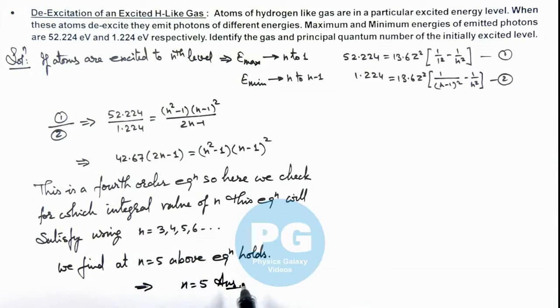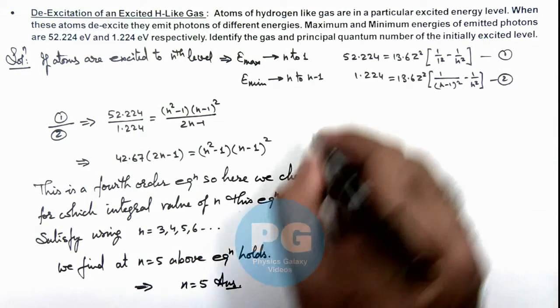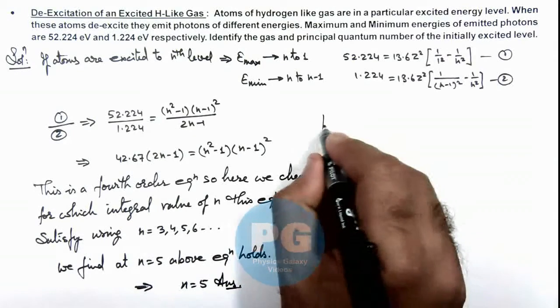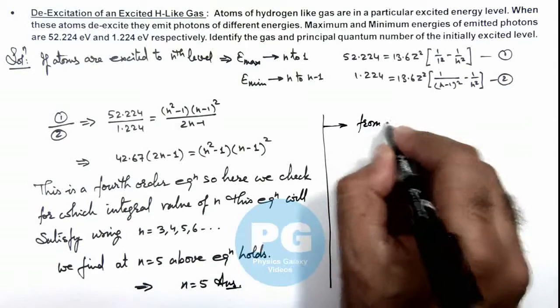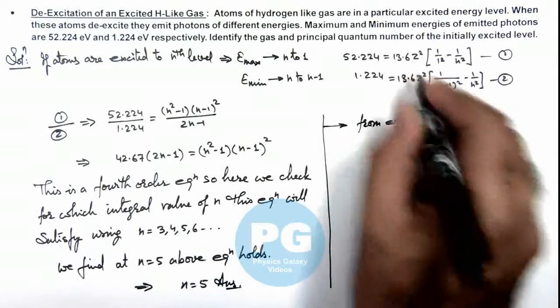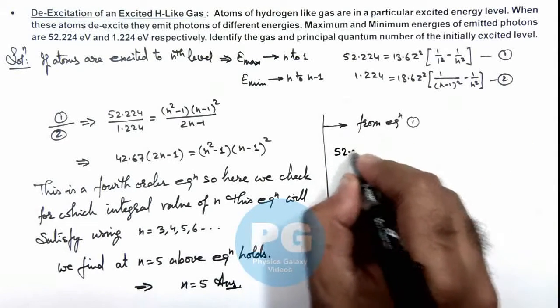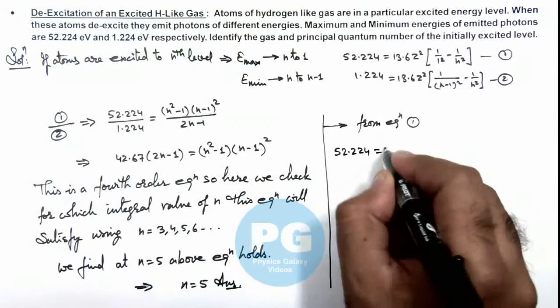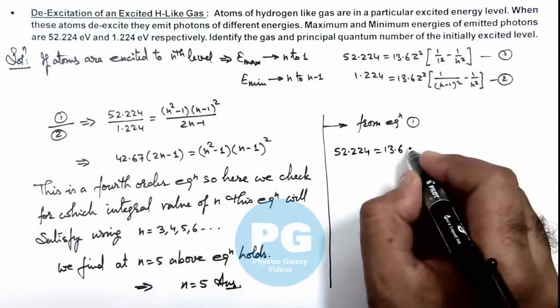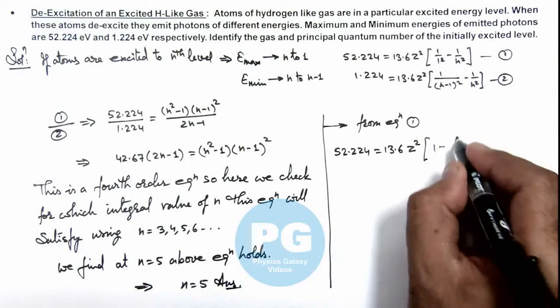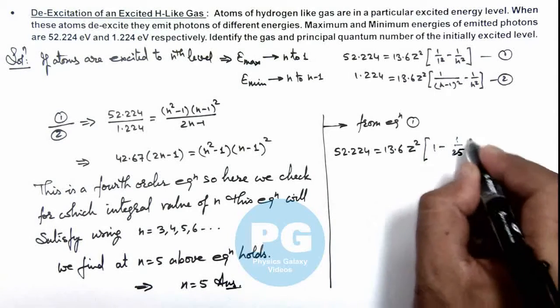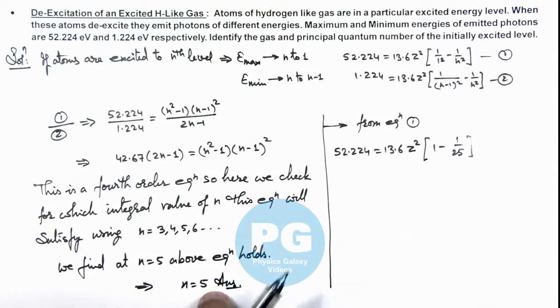Now in this situation, from equation 1, if we use 52.224 = 13.6 z² × (1 - 1/n²) = 13.6 z² × (1 - 1/25), if we substitute the value of n = 5.